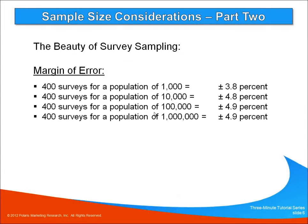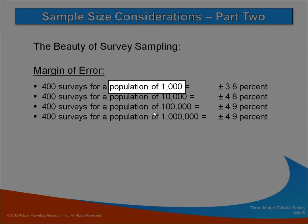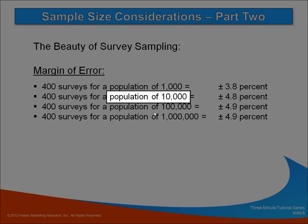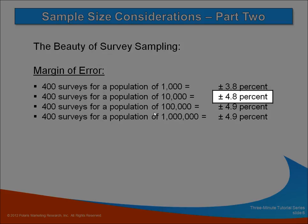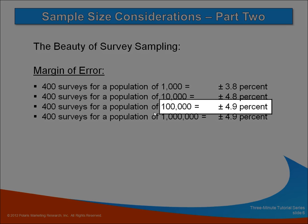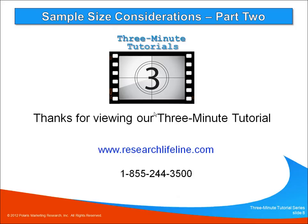Here you can see that 400 completed surveys with a population of 1,000 yields a margin of error of plus or minus 3.8%. And 400 surveys among a population of 10,000 increases the margin of error a bit to plus or minus 4.8%. But then I get about the same margin of error whether my population size is 100,000 or a million. And that concludes part 2 of our 3-minute tutorial on sample size considerations. Thanks for watching.